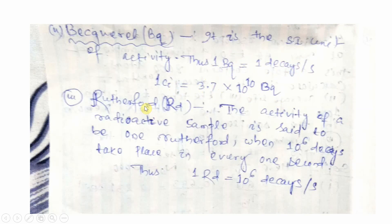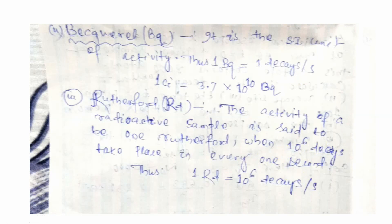One Curie equals 3.7 × 10¹⁰ Becquerel — Curie and Becquerel can be interconverted. Another unit of radioactivity is the Rutherford, named after the famous scientist Rutherford. The activity of a radioactive sample is said to be one Rutherford when 10⁶ decays take place every second. So 1 Rd = 10⁶ decays per second.